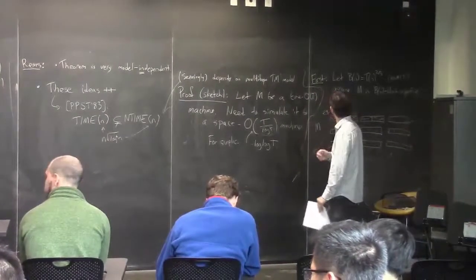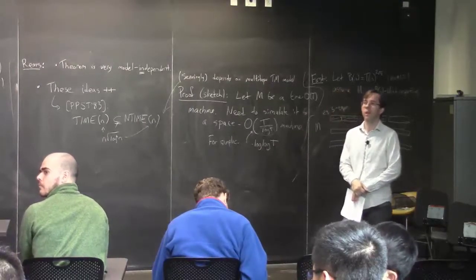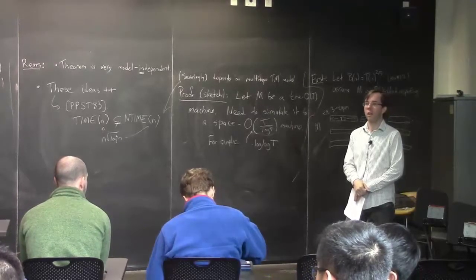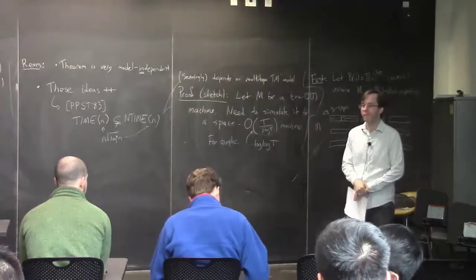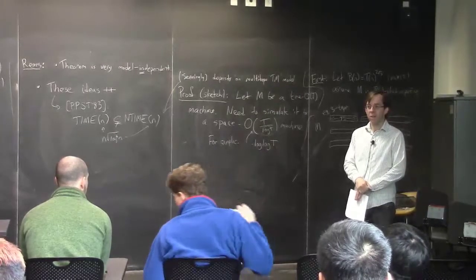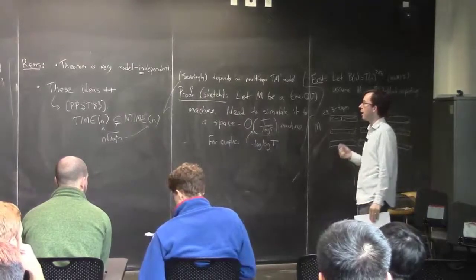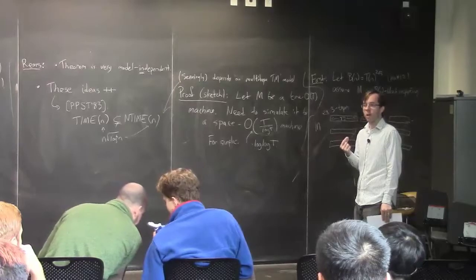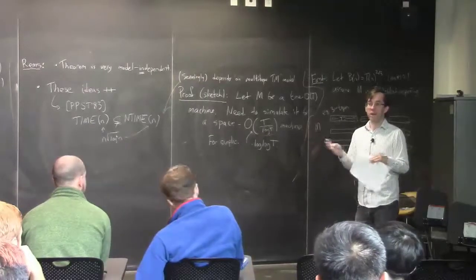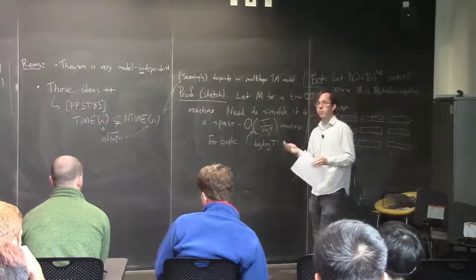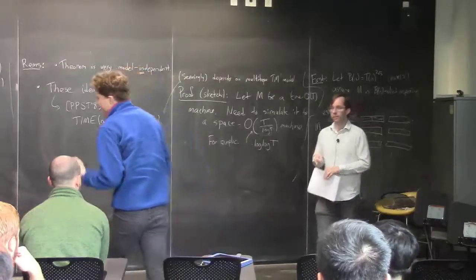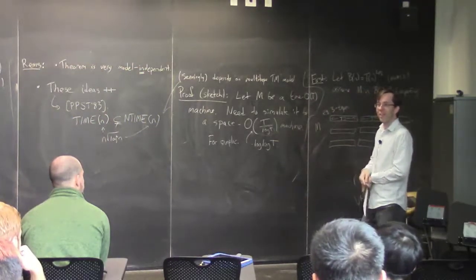Student question: As far as model dependence, at least the way I did it, block-respecting Turing machines depend heavily on the fact that tape heads can only move one slot right or left. Does this also work for random access Turing machines? I didn't read the paper, but I do know there is a paper. It's not like once you prove this for multi-tape Turing machines it's obvious it holds in other models. There was a full paper from around 1982 showing the same theorem for random access Turing machines, and another full paper for pointer machines.